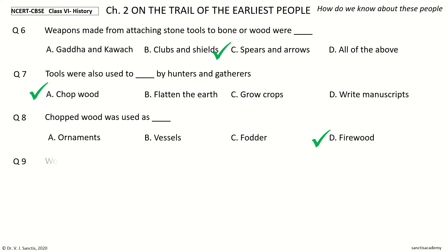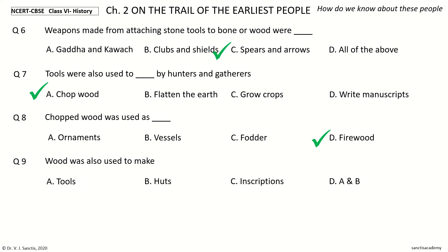Question 9: Wood was also used to make — the options: tools, huts, inscriptions, A and B. Your time to choose. And the answer is A and B.